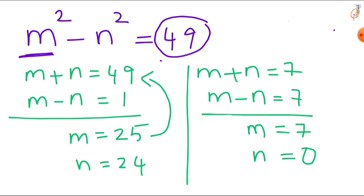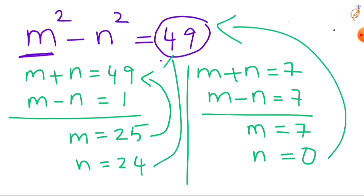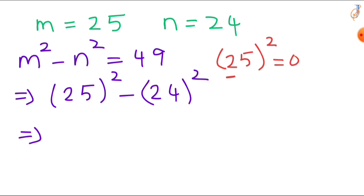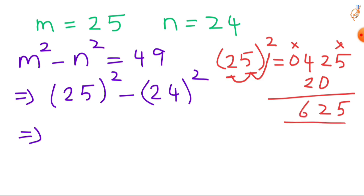Our LHS is m² - n² = 25² - 24². Using the trick we just learned to find 25 squared: square the tens digit — 2 squared is 4, write as 04. Square the units digit — 5 squared is 25. Skip first and last digits, multiply: 2 times 5 is 10, 10 times 2 is 20. After adding all you get 625. So 25 squared equals 625.